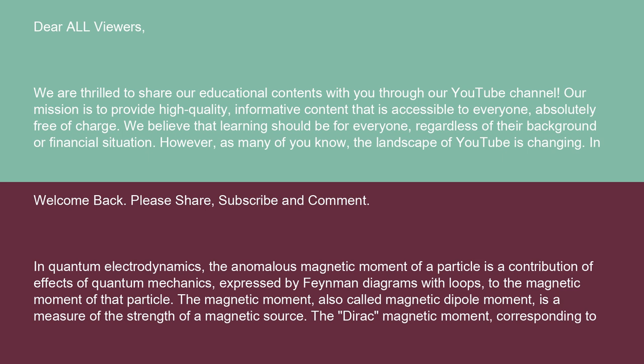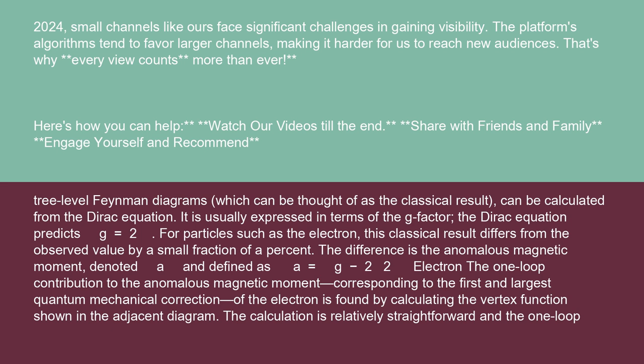The Dirac magnetic moment corresponding to tree-level Feynman diagrams, which can be thought of as the classical result, can be calculated from the Dirac equation. It is usually expressed in terms of the g-factor. The Dirac equation predicts g equals 2.